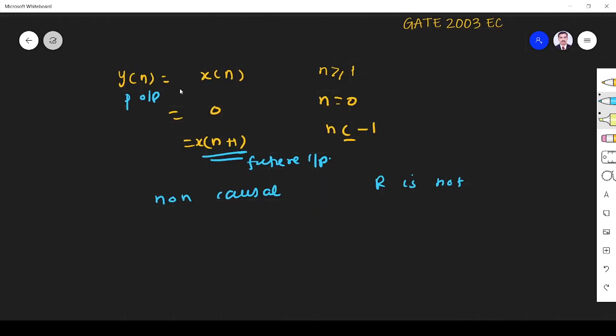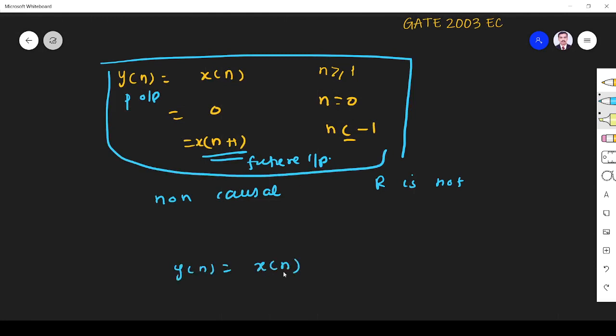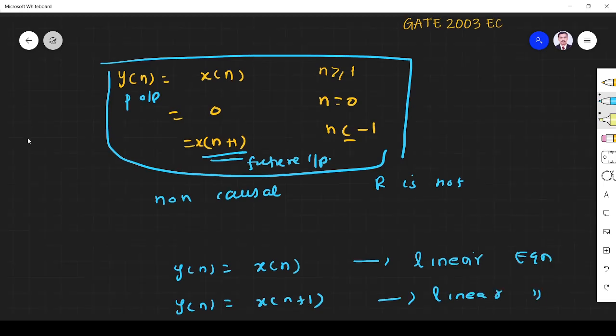Let us see if it is a linear system. By seeing the equation itself we can understand mathematically: y(n) equals x(n), this is linear. Linear relation, so linear equation. No need to go for superposition theorem. Similarly, y(n) equals x(n+1), here also linear. So both are linear, so the system should be linear.